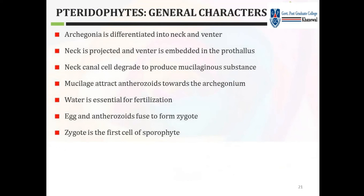Antherozoids (male gametes) are unicellular, spirally coiled, with two apical flagella. Archegonia are differentiated into neck and venter. Neck canal cells degrade to produce a mucilaginous substance, which attracts antherozoids toward the archegonium. Water is essential for fertilization. The egg and antherozoids fuse to form the zygote, which is the first cell of the sporophytic generation.